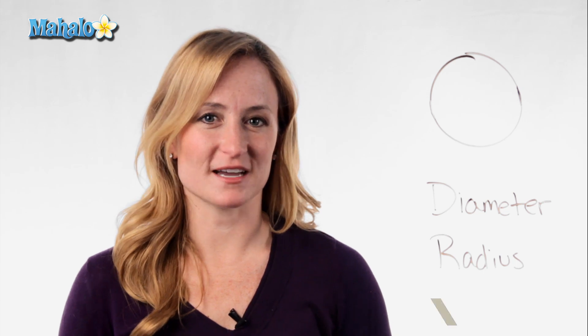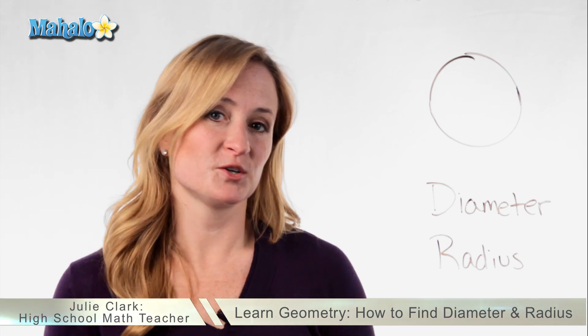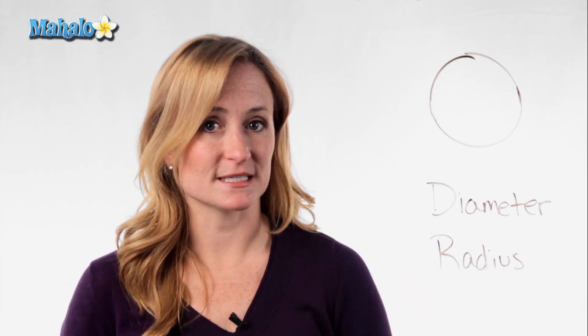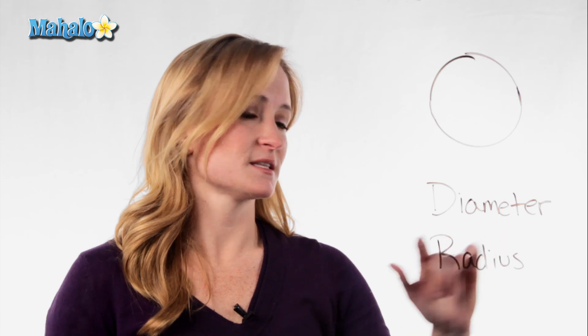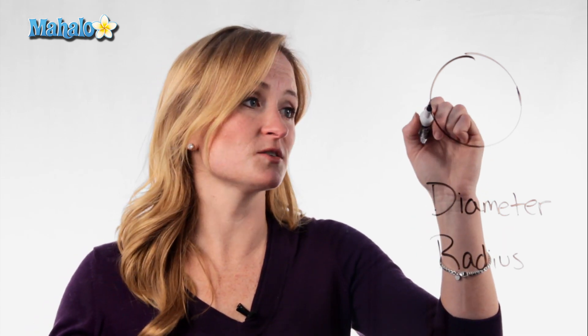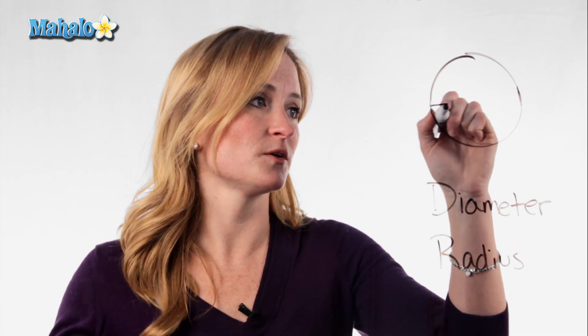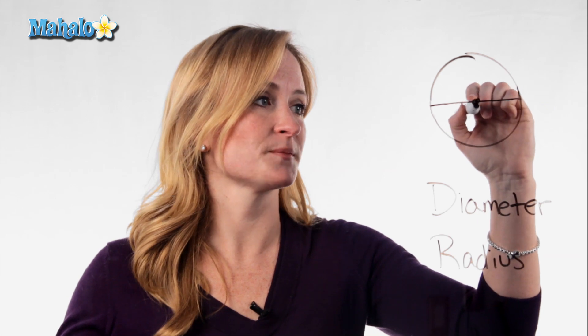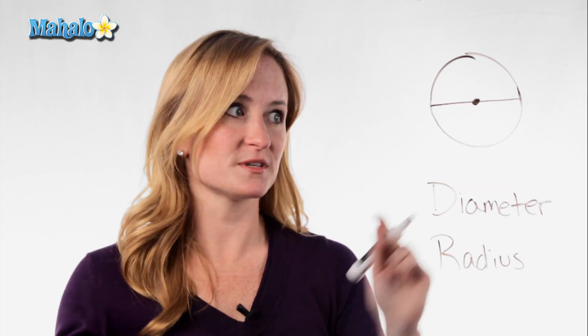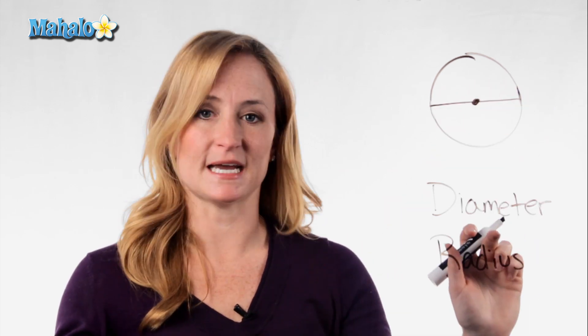Hey, this is Julie with Mahalo.com, and today we're going to go over some common terms that are used when learning about circles. The two most common words are diameter and radius. The diameter is the measure across the circle through a center point — so the entire length of the circle through the center point is the diameter.